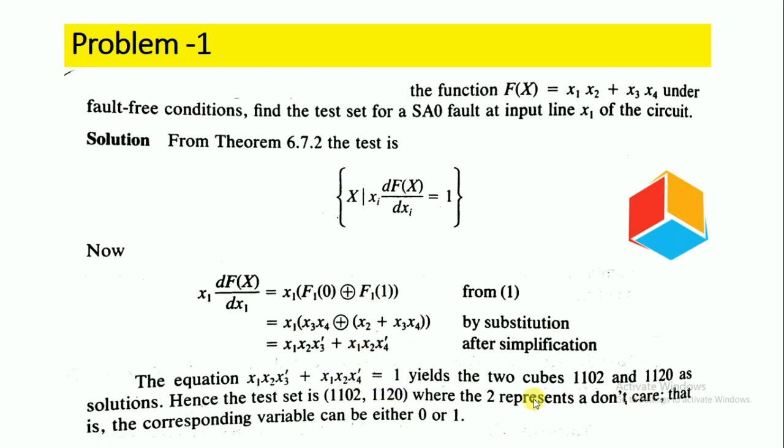This yields two cubes: 1102 and 1120. The eliminated variable is represented by 2. In the first cube, x4 is eliminated, giving 1102. The second cube is 1120. These are the two solution cubes for the stuck-at-0 fault.